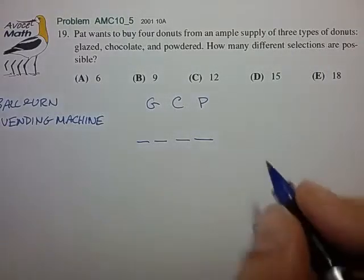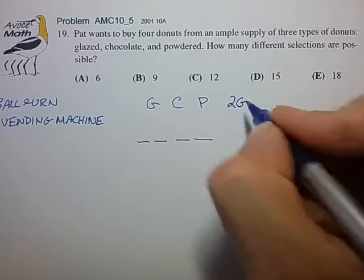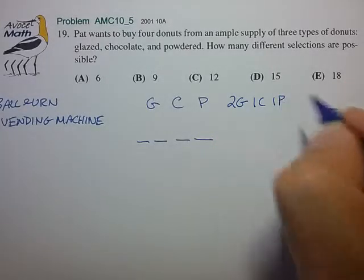So one particular selection might be, for instance, two glazed, one chocolate, one powdered.